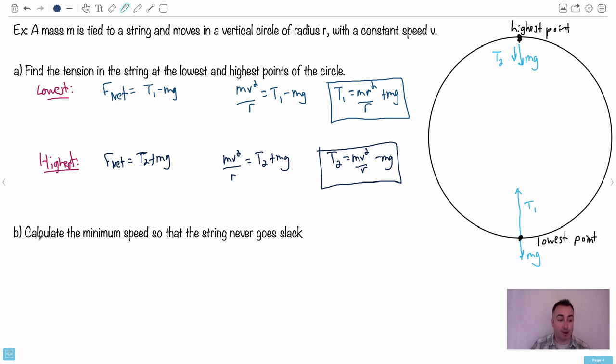Let's see what we can do with this. We want to calculate the minimum speed so that the string never goes slack. That may not sound so obvious. What's going on is that it all depends on the speed at which you rotate this thing. If you rotate this thing really, really slowly, tension two can technically be zero. Do you see that? Like it goes slack. It goes slack when tension two equals zero. Does that make sense? Or if it's less than zero, then it's slack.